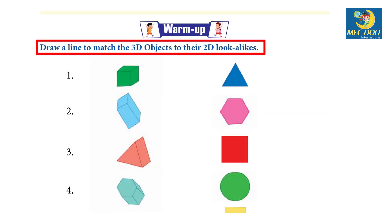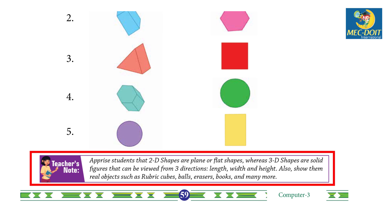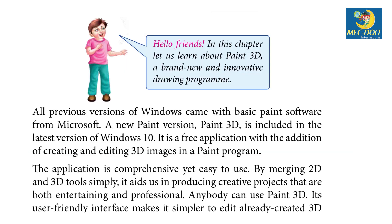Warm up: Draw a line to match the 3D objects to their 2D object look-alikes. Teacher's note: Apprise students that 2D shapes are plain or flat shapes, whereas 3D shapes are solid figures that can be viewed from three directions — length, width, and height. Show them real objects such as Rubik's cubes, balls, erasers, books, and many more.